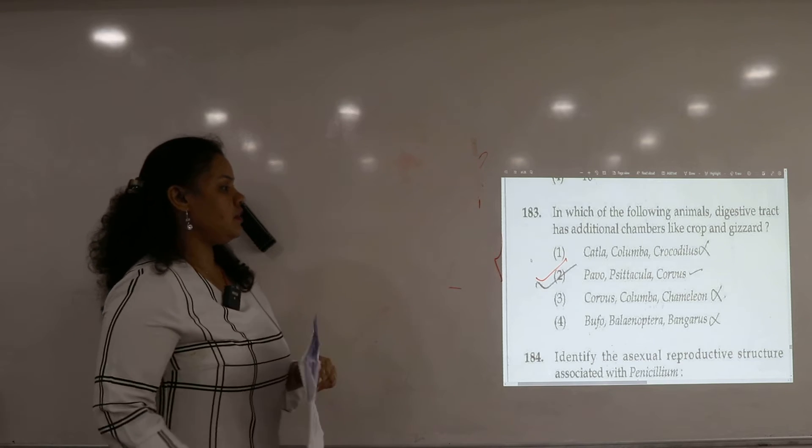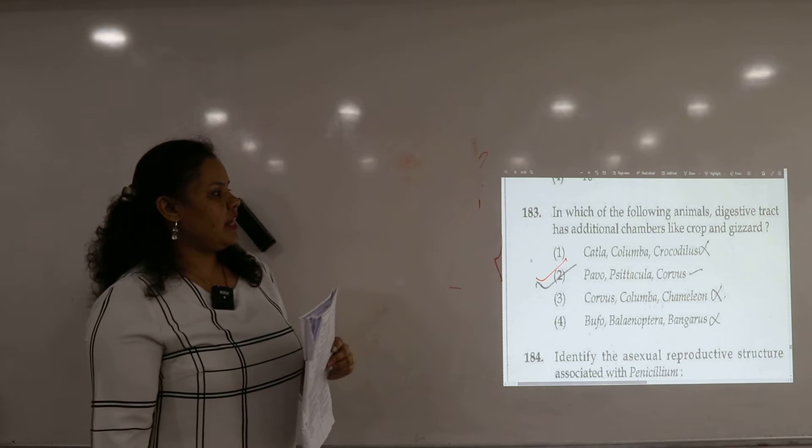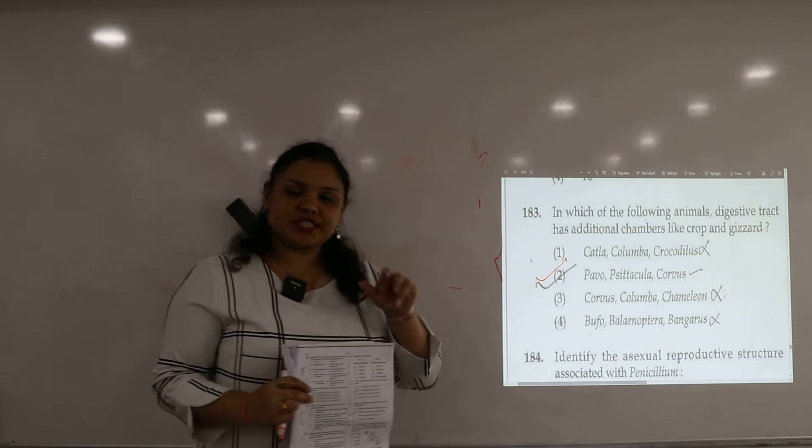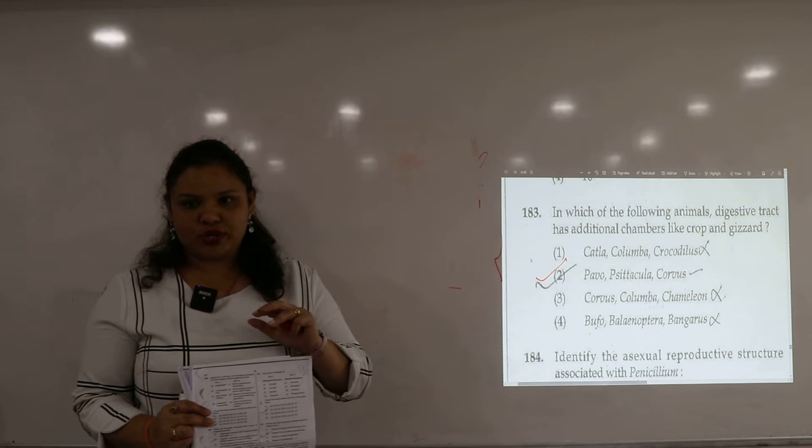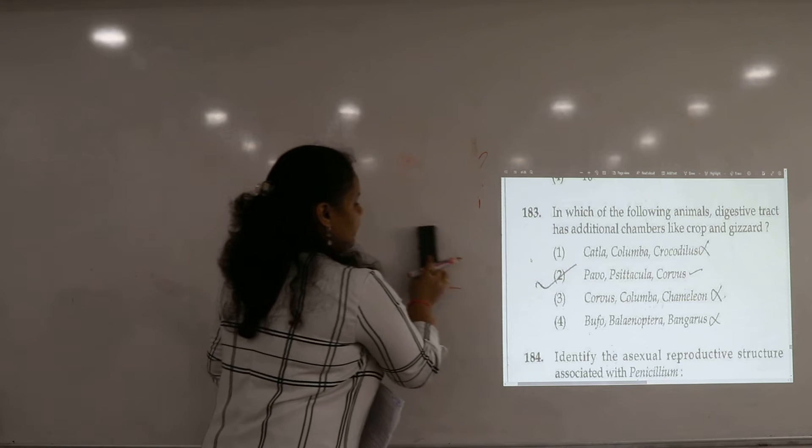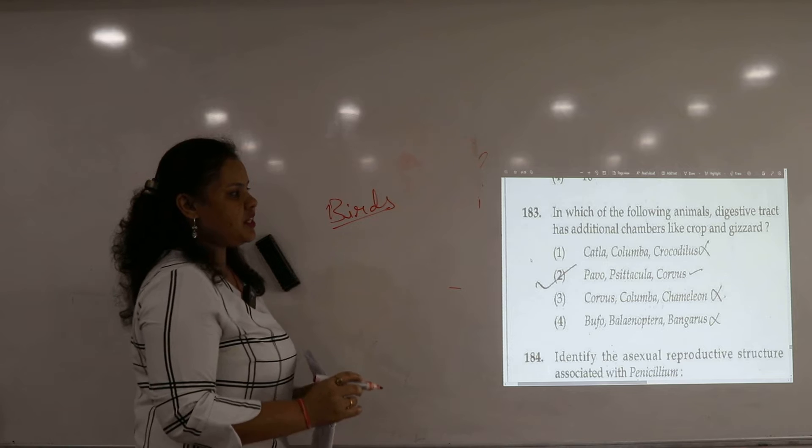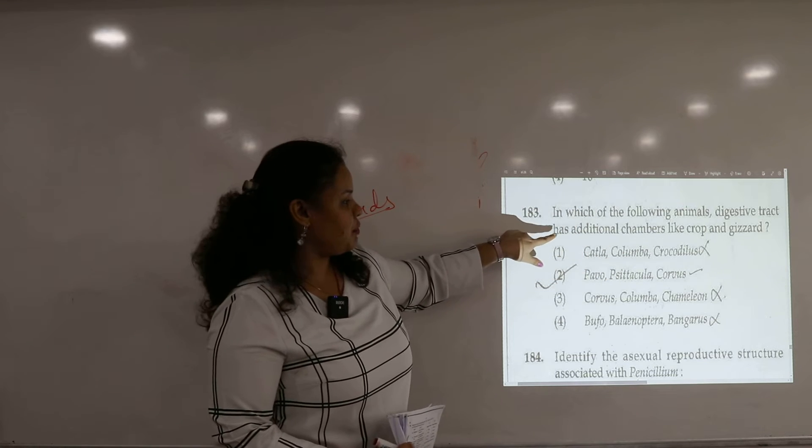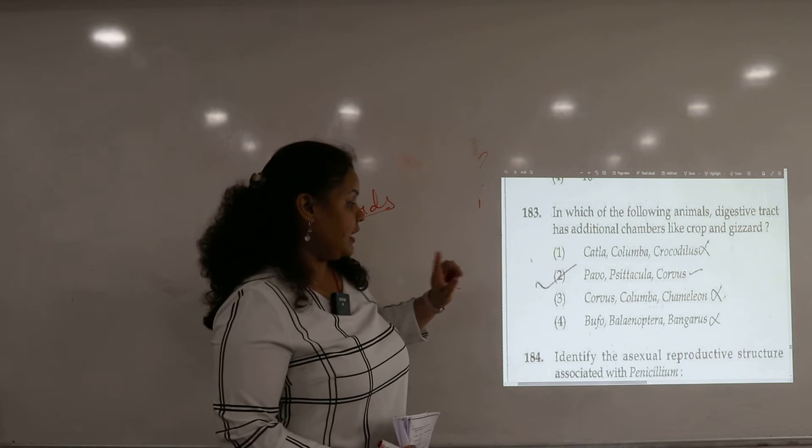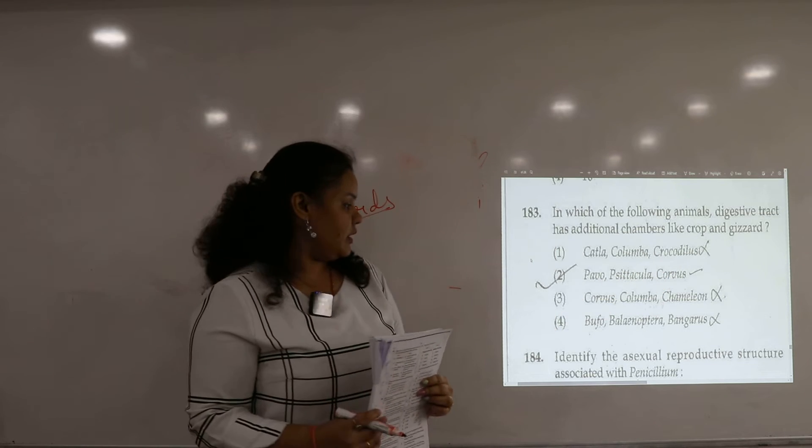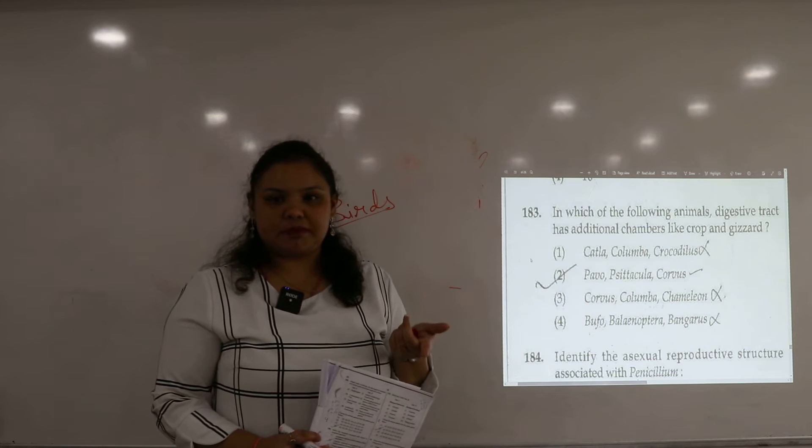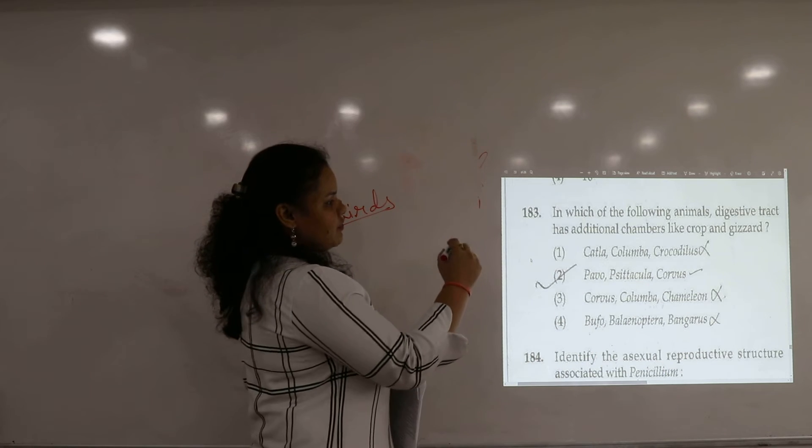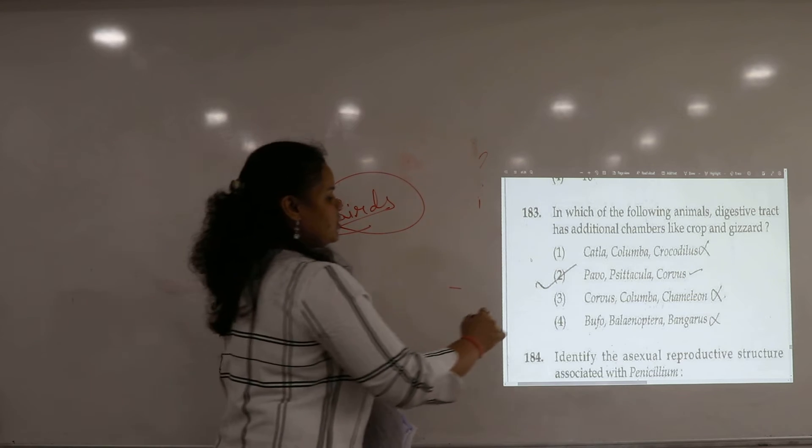Now next question, question number 183. In which of the following animals digestive tract has additional chambers? Additional chambers are crop and gizzard for grinding and storage of food. So in this case birds have digestive tract with two additional chambers, crop and gizzard. So combination: pavo, phasianaculus and corvus. These three are birds. So your right answer for this question, bird has extra additional chambers. So our right answer will be pavo, phasianaculus and corvus.